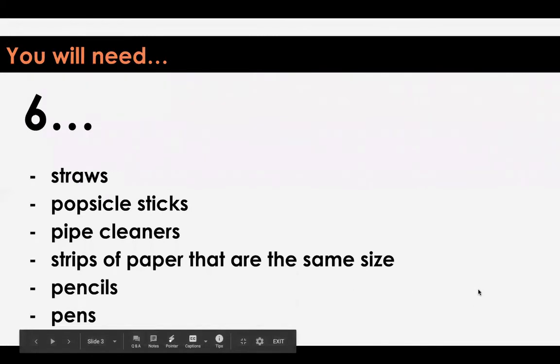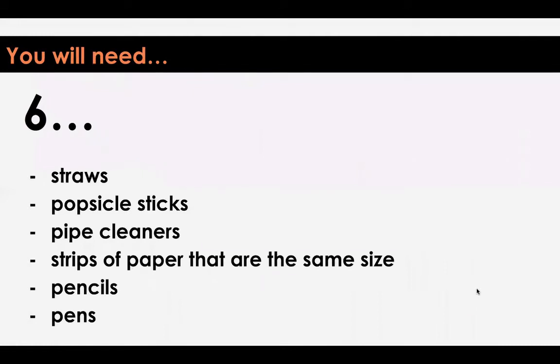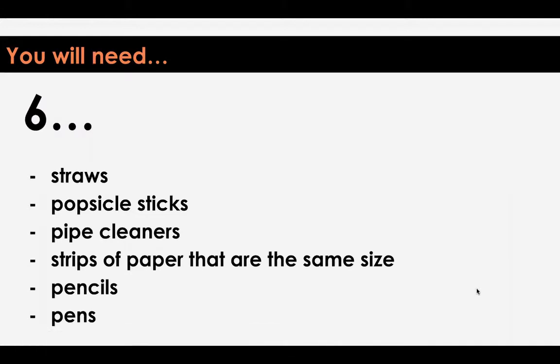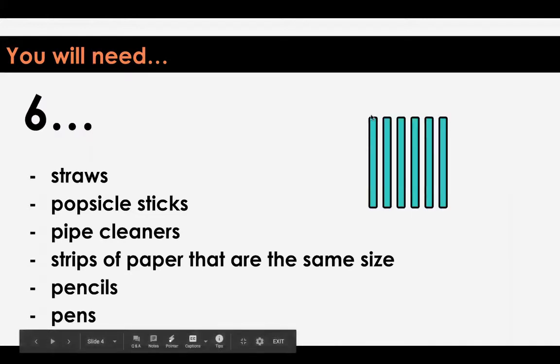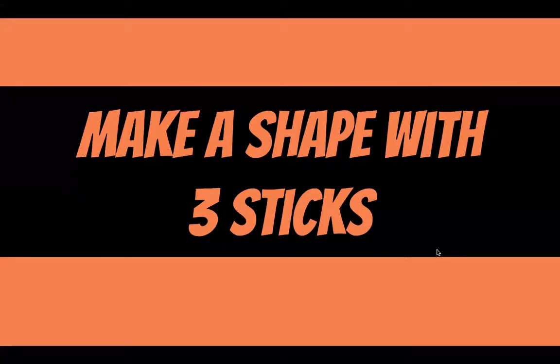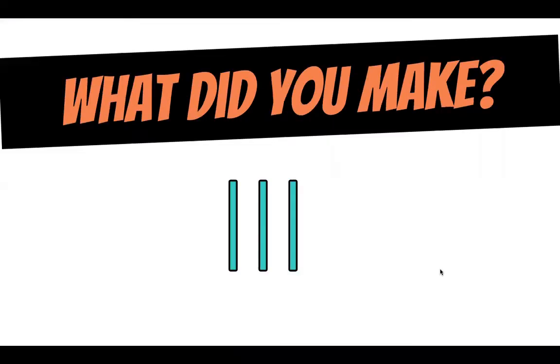So first if you haven't yet make sure you go grab six straws, popsicle sticks, pipe cleaners, strips of paper that are the same size, pencils, pens, crayons, whatever works for you that will be something kind of like a stick. Usually when we do these in class I will give you clear plastic straws. All right, first up I want you to make a shape with three sticks.